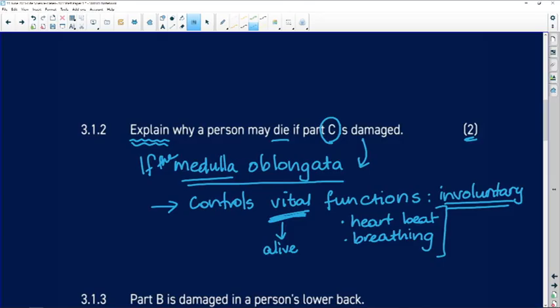So if the medulla oblongata is damaged, it means that essential vital functions that keep you alive will not be happening anymore, and that is why you would die.